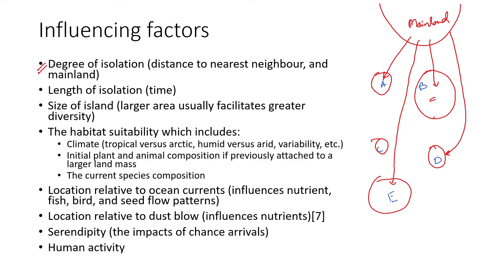The influencing factors that decide island biogeography theory, movement, rate of extinction, and colonization include: degree of isolation — that is, distance from the nearest neighbor or mainland; length of isolation — how much time has passed, as older islands show more species diversity; and size of the island — the larger the area, the greater the diversity and richness.